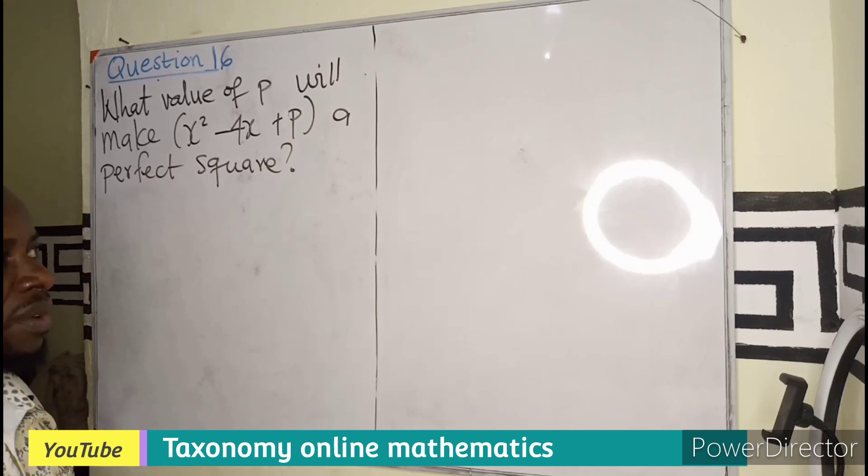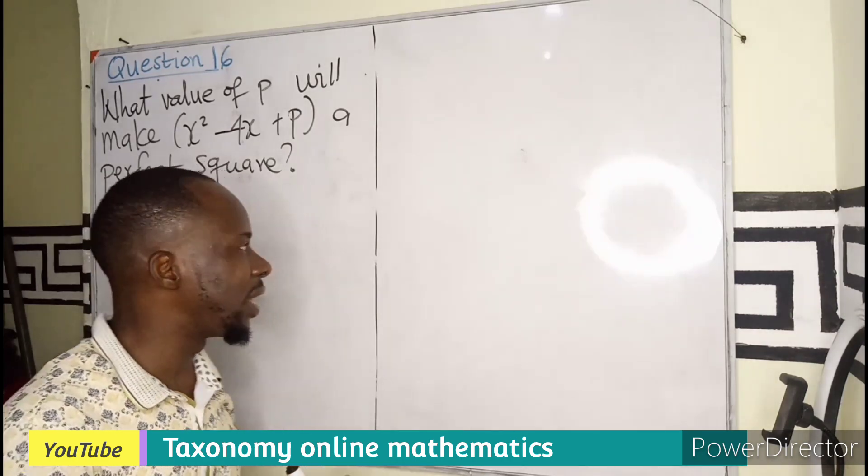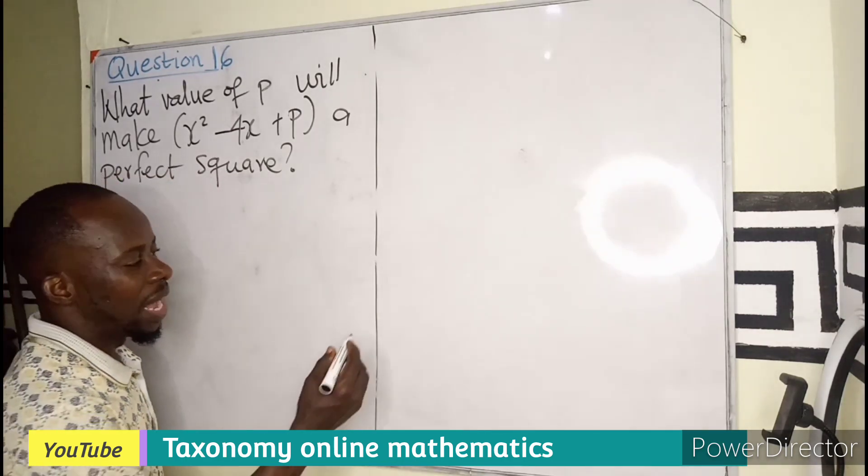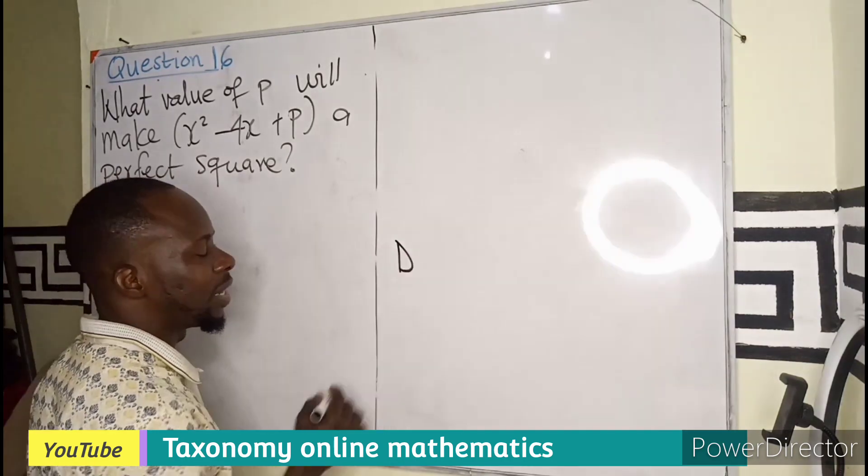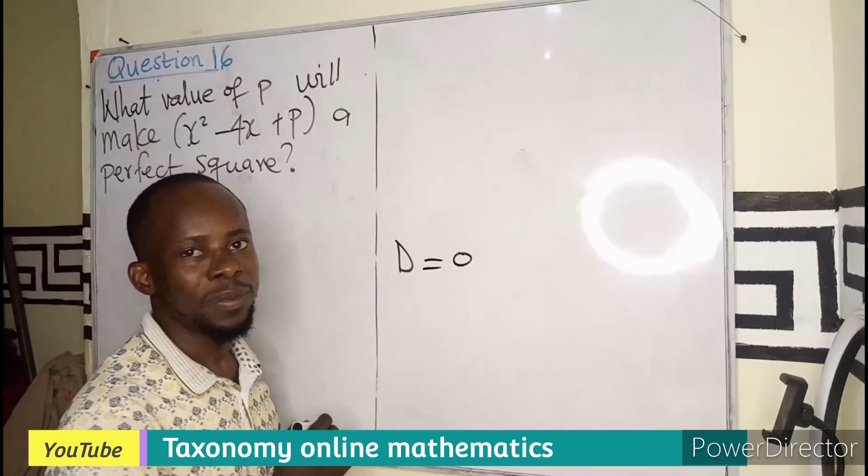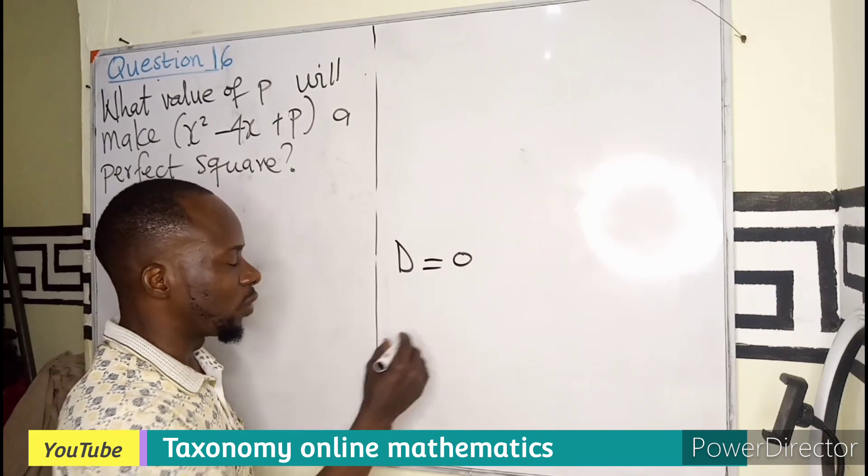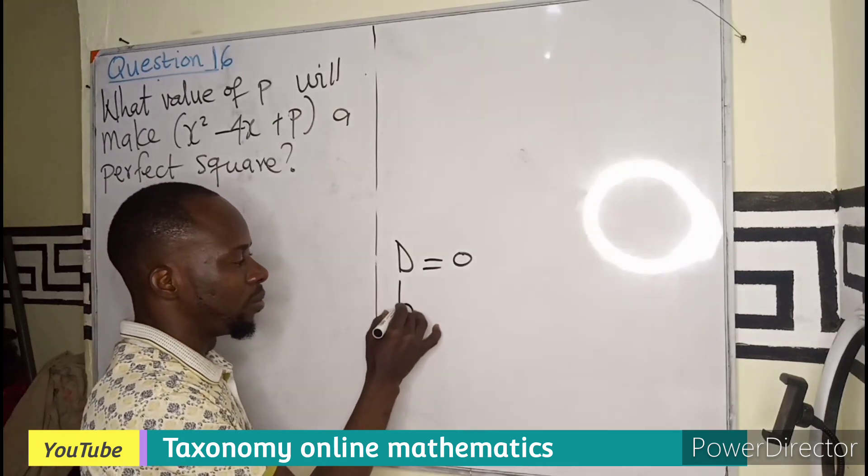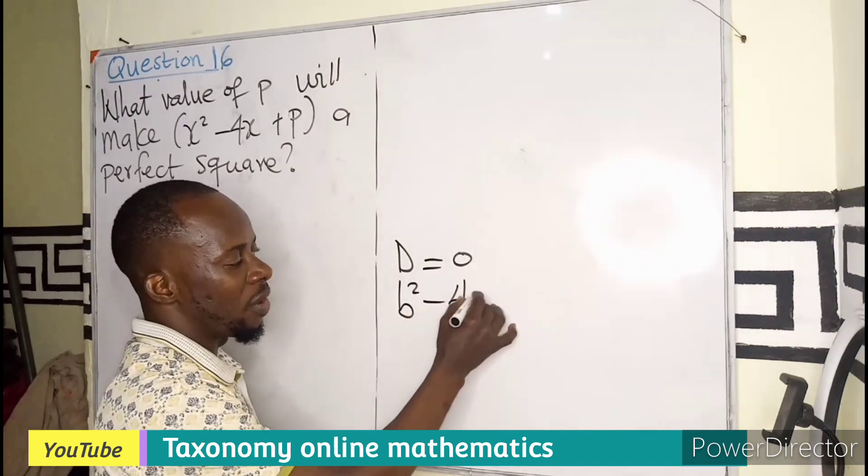Now, for a quadratic equation to be a perfect square, we know that our discriminant must be equal to 0. And the discriminant is in this form, b squared minus 4ac.